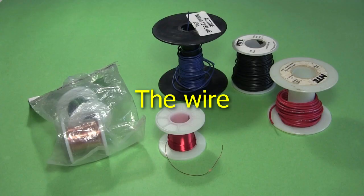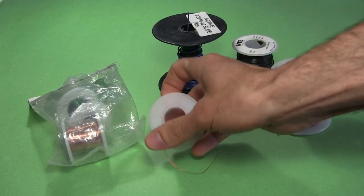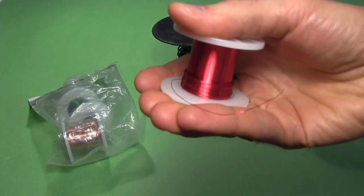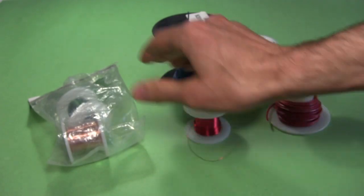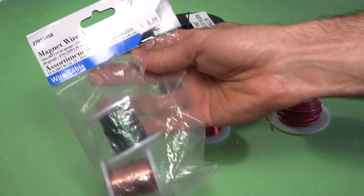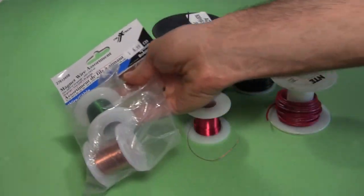You'll also need some wire, some for connecting it all together and some for winding coils. One of the wires will need to be very thin with thin insulation, often called magnet wire. I got it in this package from Radio Shack, but any electronics store will have it. More on that later.